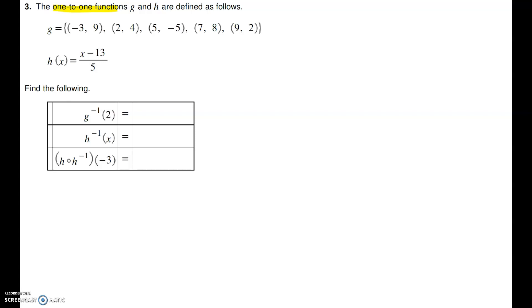The one-to-one functions G and H are defined as follows. G consisting of ordered pairs negative 3 comma 9, 2 comma 4, 5 comma negative 5, 7 comma 8, 9 comma 2. H of x is x minus 13 divided by 5.